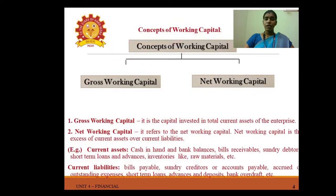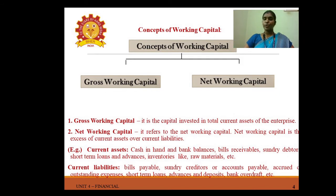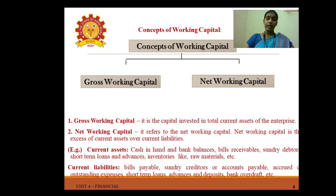There are two concepts of working capital: first, gross working capital, and second, net working capital. Gross working capital is the capital invested in total current assets of the enterprise — cash, receivables, inventories, and securities. Net working capital refers to the excess of current assets over current liabilities.